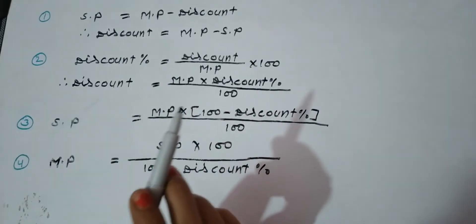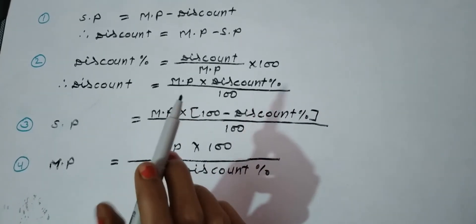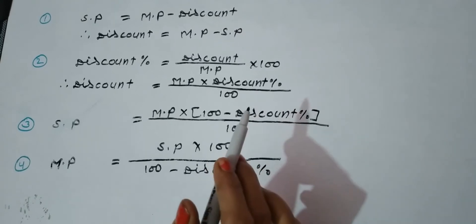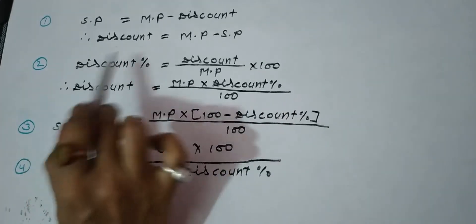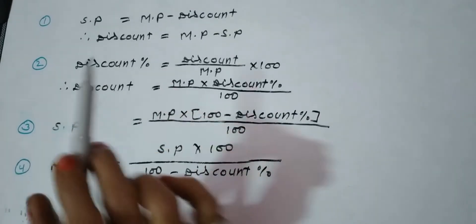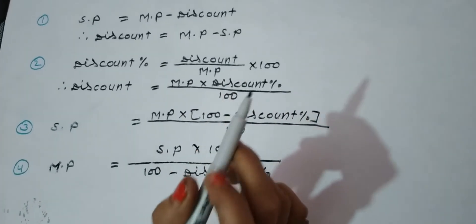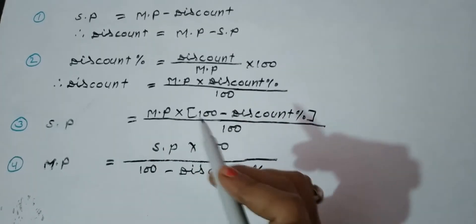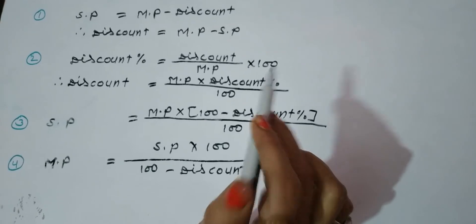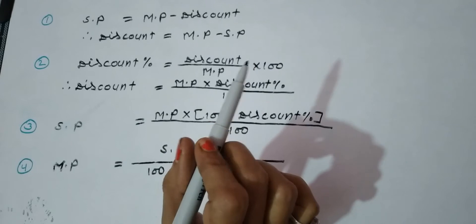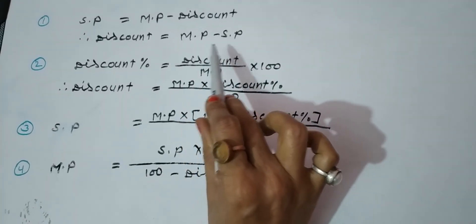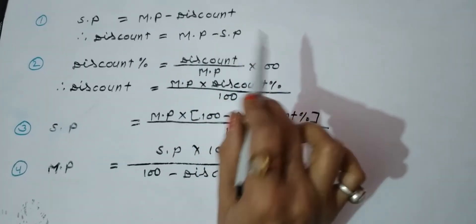If you go to a department store or mall — for example, if you see an item whose price is 100 rupees, but the shopkeeper is selling it to someone for 80 rupees, that means the shopkeeper is giving us a discount of 20 rupees. So when we calculate discount, market price was 100 rupees and selling price is 80 rupees. Market price minus selling price gives us the discount.